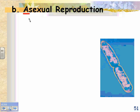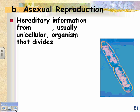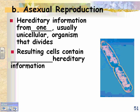When you put an 'a' in front of a word it means 'not.' Sexual means two parents; asexual means not — so just one parent. In asexual reproduction, hereditary information from one organism, usually unicellular but not always, is passed on when it divides. The resulting cells contain identical hereditary information. For example, one bacterium divides and soon becomes two bacteria that are exactly identical to each other.